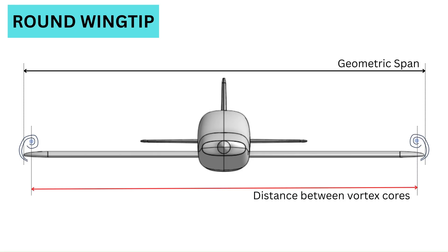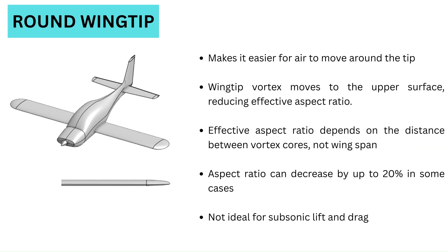Effective aspect ratio is calculated by using the distance between the wingtip vortex cores, not based on the geometric span of the wing. This means that the further away the wingtip vortices are, the higher the effective span and the lower the induced drag. However, the opposite is true for round wingtips, where the effective span is reduced — aspect ratio may be reduced as much as 20% for some configurations. Therefore, it is not a very good shape for subsonic lift and drag.